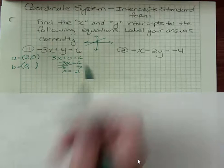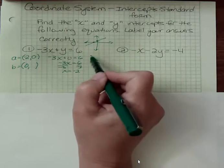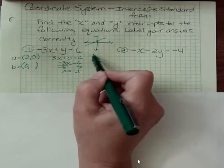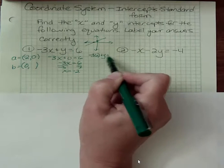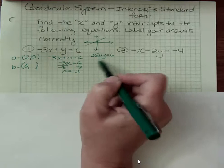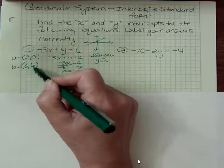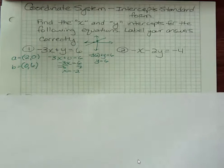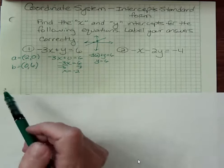And then I want to find out my y intercept. So I'm going to say x is zero. And then negative three times zero drops away because it's zero. And y equals six. So there's my answer. I have an x intercept of negative two and a y intercept of six.